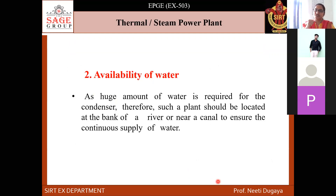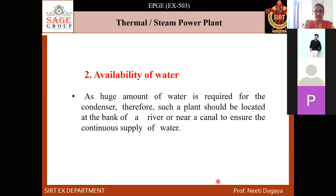The next point is availability of water. The working of a power plant requires a large amount of water — to be heated into steam, then condensed, and for cooling towers. There should be a river, canal, or water body nearby. A huge amount of water is required for the condenser, so the plant should be located on the bank of a river or near a canal to ensure continuous water supply.